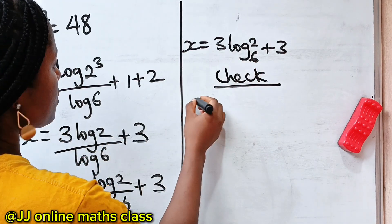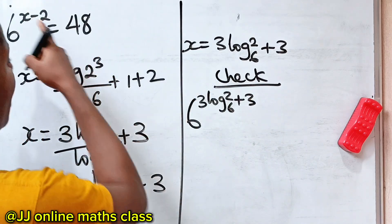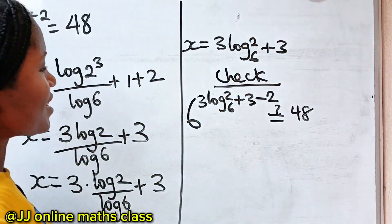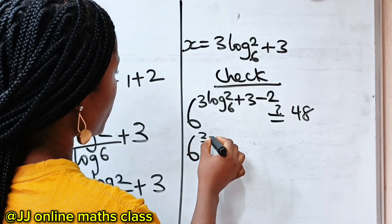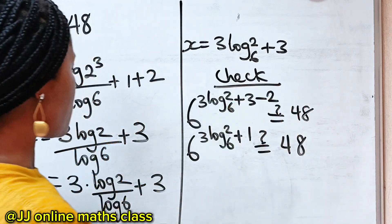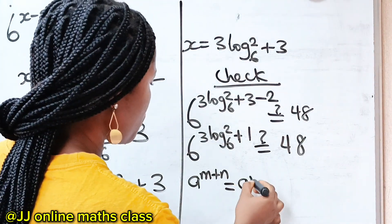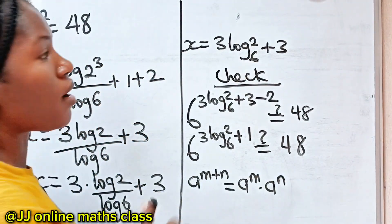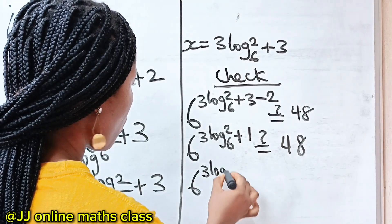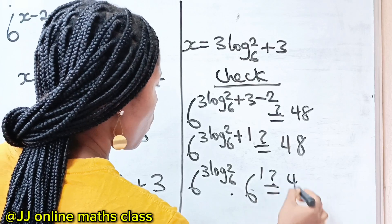Now let's prove our answer is correct. We can write this as 6 to the power of 3·log₆2 plus 3, minus 2, equals 48. Simplifying, we have 6 to the power of 3·log₆2 plus 1. Now remember that a to the power of M plus N is equal to a to the power of M multiplied by a to the power of N, so we can write this as 6 to the power of 3·log₆2, multiplied by 6 to the power of 1. Is this equal to 48?